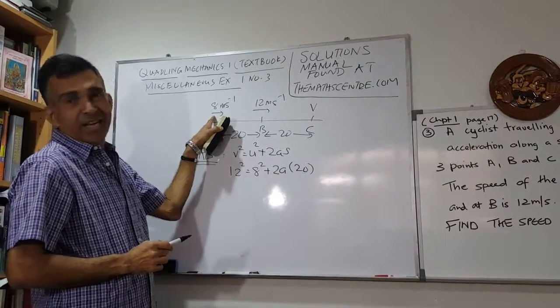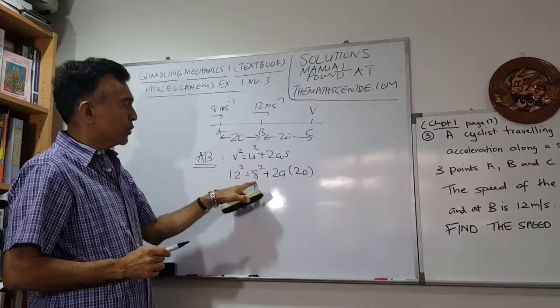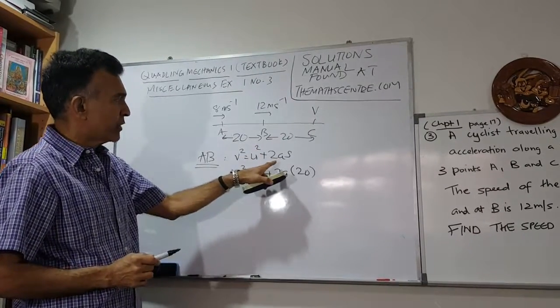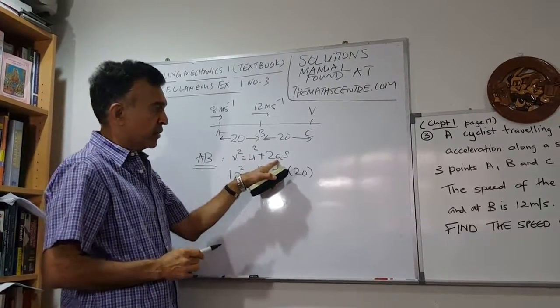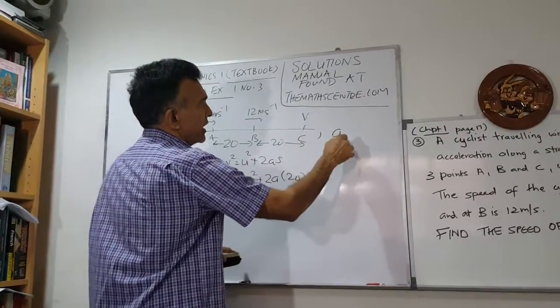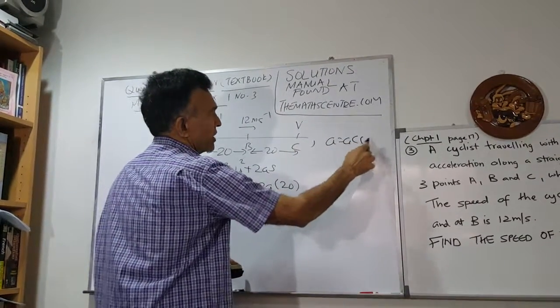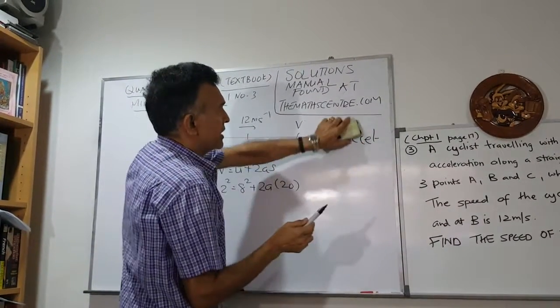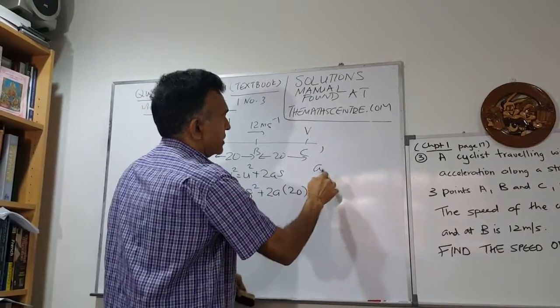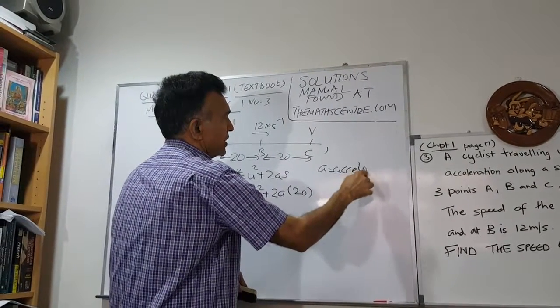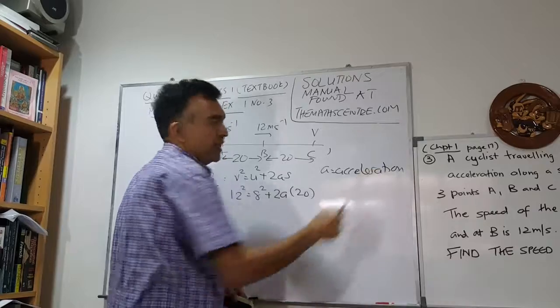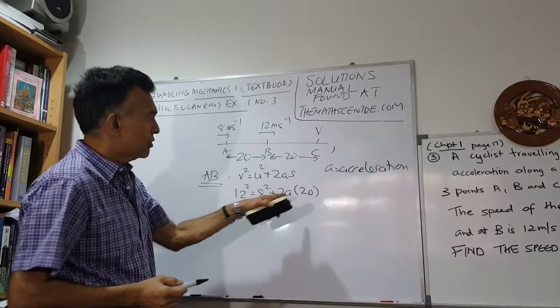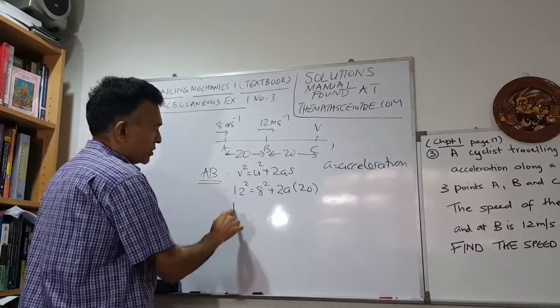The velocity at A is 8, so u² is 8². We don't know a - we're trying to find the acceleration. Let me write that: a is the acceleration we're trying to find.